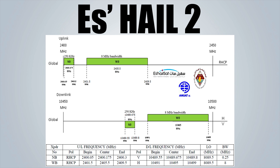The narrowband transponder, which has a bandwidth of 250 kHz, can be used for modes such as SSB, CW, and PSK, while the wideband transponder, which has the 8 MHz bandwidth, can be used for digital amateur television.